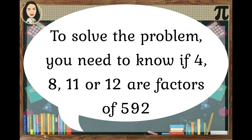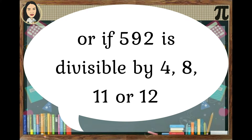To solve the problem, you need to know if 4, 8, 11, or 12 are factors of 592 — or if 592 is divisible by 4, 8, 11, or 12.